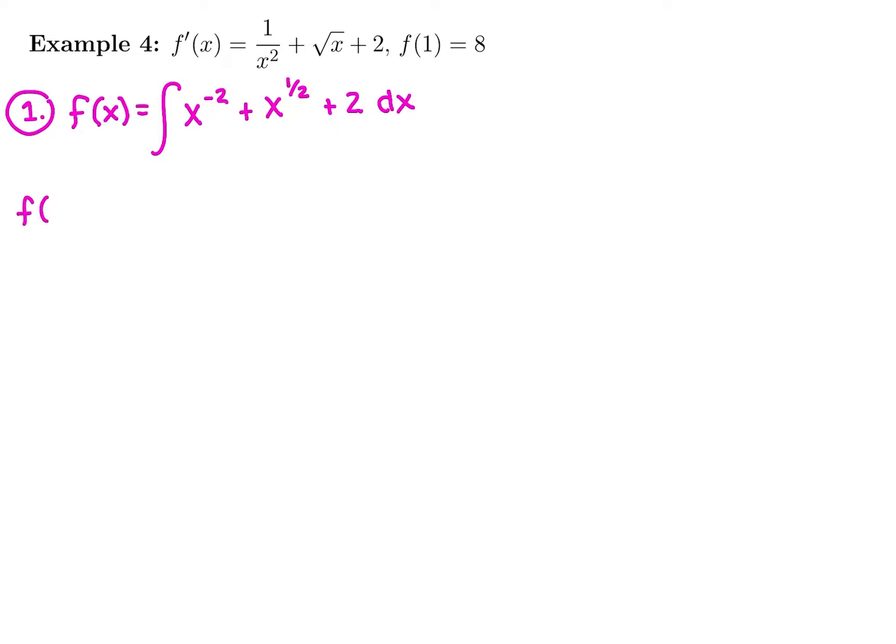Now I'm ready to actually take the antiderivative of each piece. So I'm going to add 1 and divide by it and put it as my exponent. So negative 2 plus 1, I'm going to have 1 over negative 1, x to the negative 1.